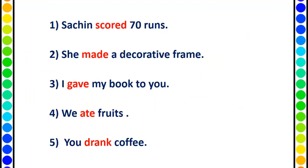She made a decorative frame. I gave my book to you. We ate fruits. You drank coffee. Now look at the highlighted red words: scored, made, gave, ate, and drank. These are the past tense forms of the verbs.